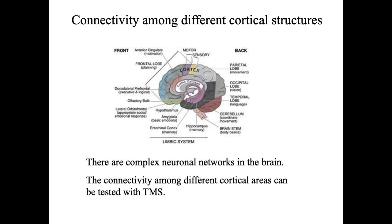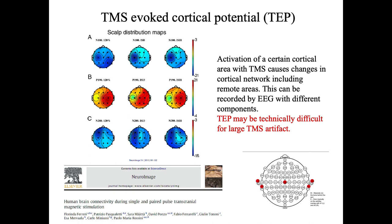TMS can also be given to other different cortical areas, as there are very complex cortical networks in the brain, and TMS can be used to test the connectivity between different cortical areas. In this figure, we use electroencephalography EEG to record the effect of TMS. By analyzing the different response components and the different locations of the TMS-induced effect, we can know that TMS at one site can activate remote cortical areas.